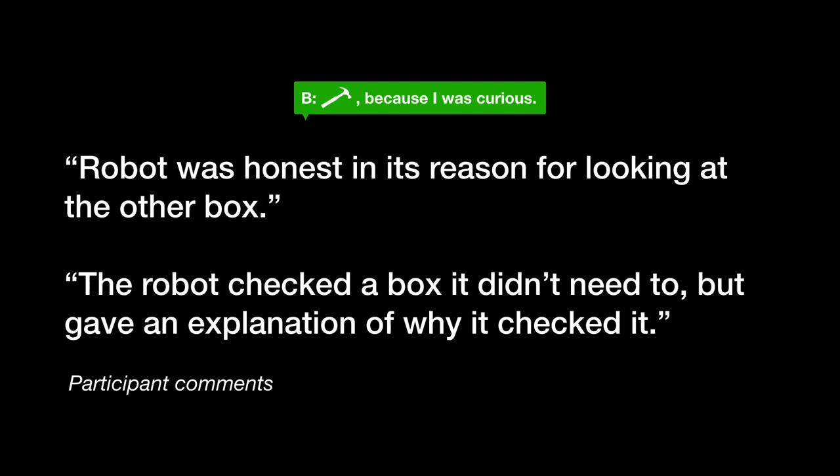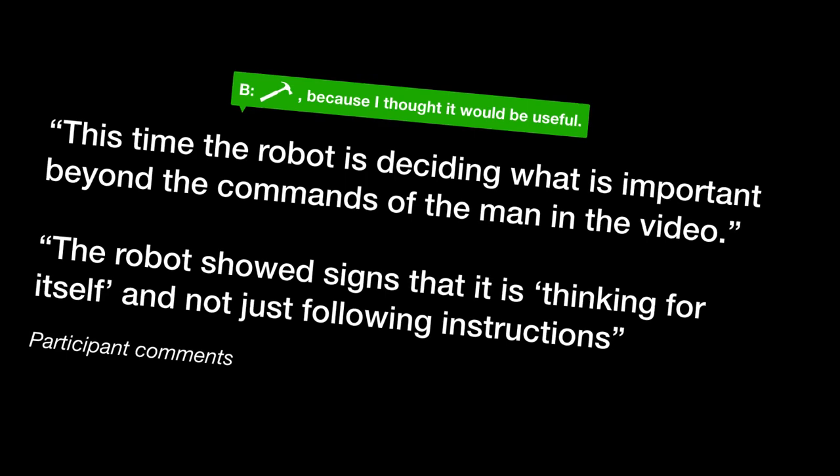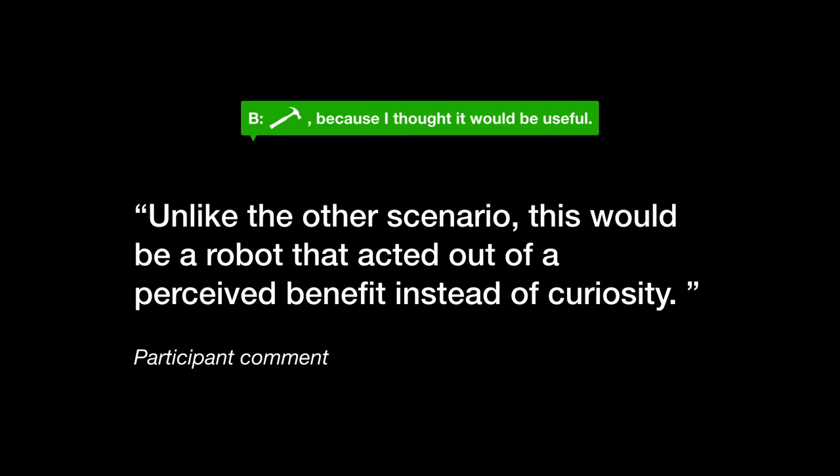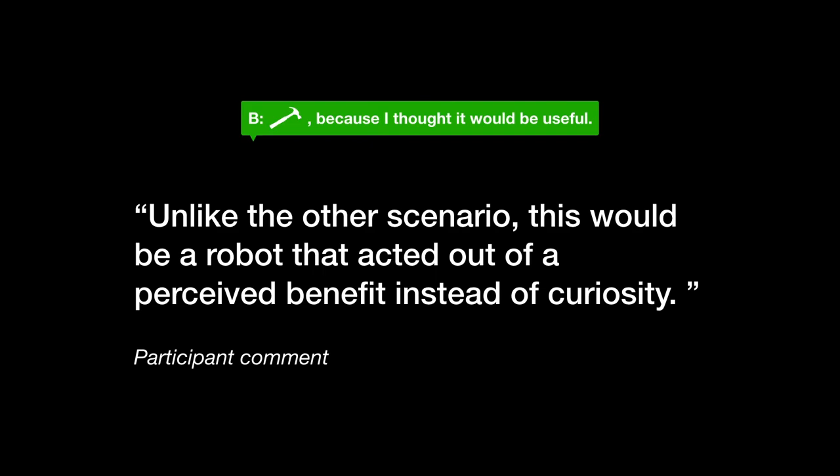Looking at what participants thought, it's clear that the explanation removed the ambiguity of the behavior and made more participants comfortable with the interaction. Many were positive about the robot that appealed to utility, giving more attributions of intelligence and agency, saying things like it was thinking for itself. Some participants questioned whether this robot was actually curious because it was acting for a perceived benefit.